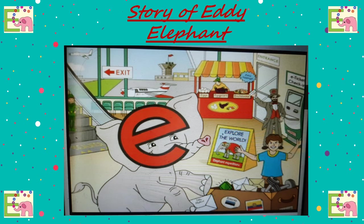That was a fun story! Now children, I spoke some words during the story which are related to letter E. I will say them again and you have to find them out. Exit, elf, envelope, exercise equipment, egg, escalator, emerald.